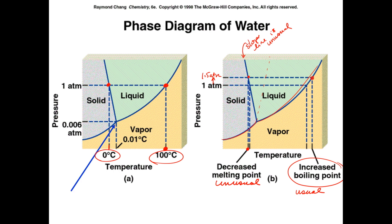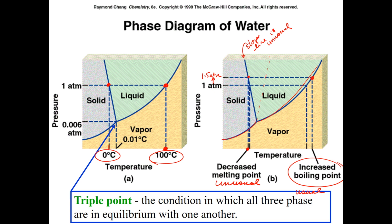We also see something called the triple point — a condition where you can actually have an equilibrium between all three phases simultaneously, with boiling, freezing, and melting all happening at once. For water, that occurs at a temperature of 0.01°C and a pressure of 0.006 atmospheres. It's strange to see boiling happening when ice is present, but that can happen at the triple point.